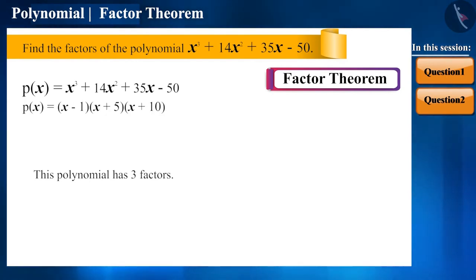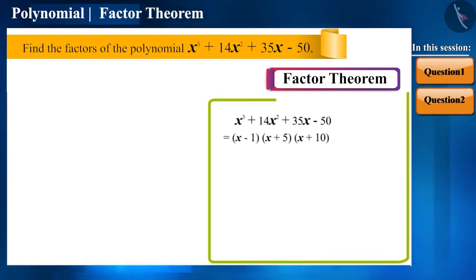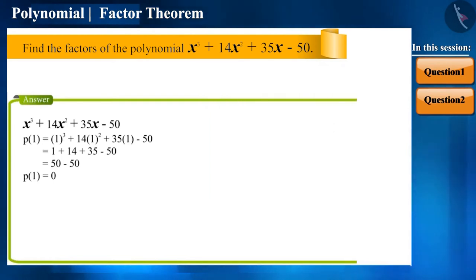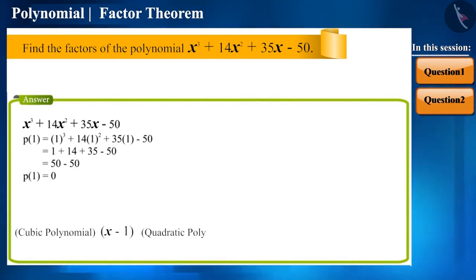Friends, after finding the first factor, you can solve it without finding the other factors. Let's see how. When we got p of 1 as 0, we derived our first factor x minus 1. So, now let's take x minus 1 common from this cubic polynomial.